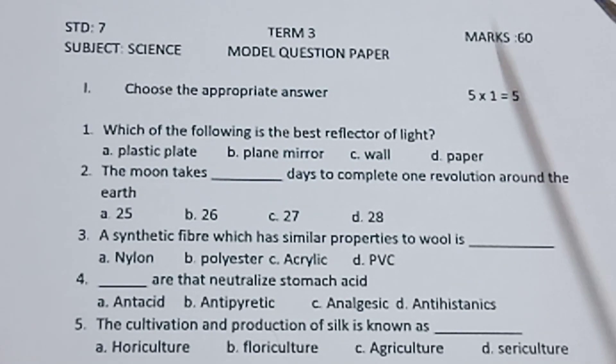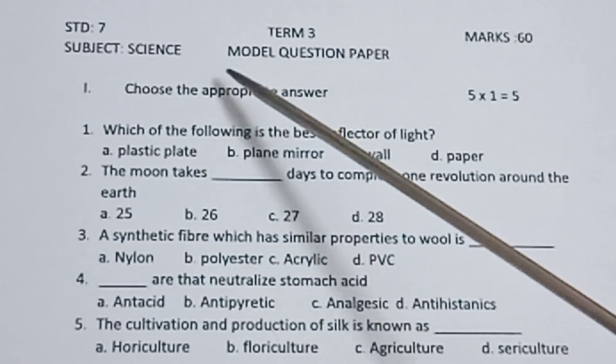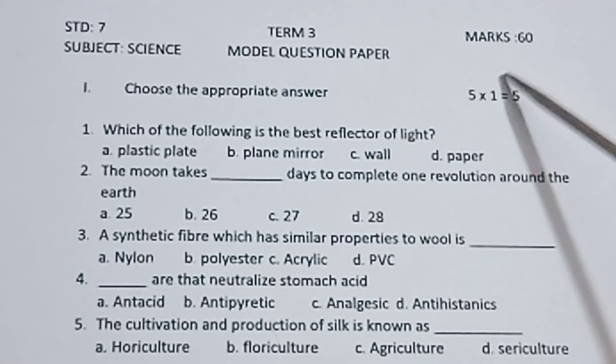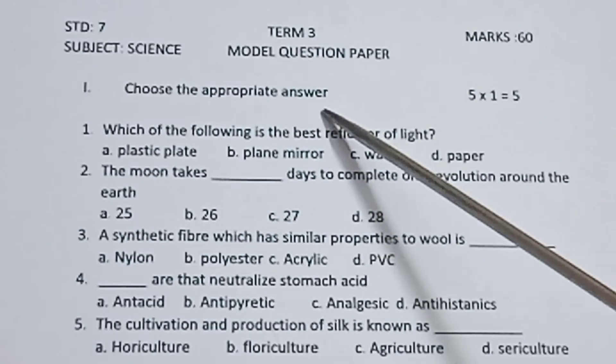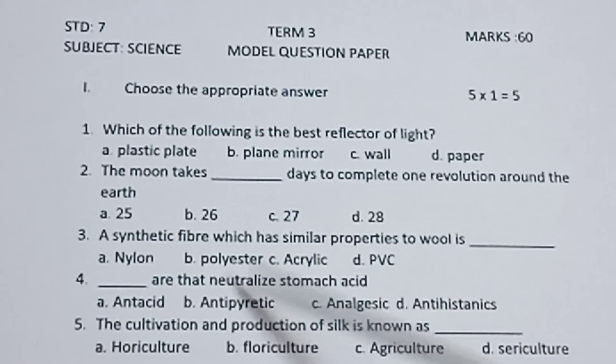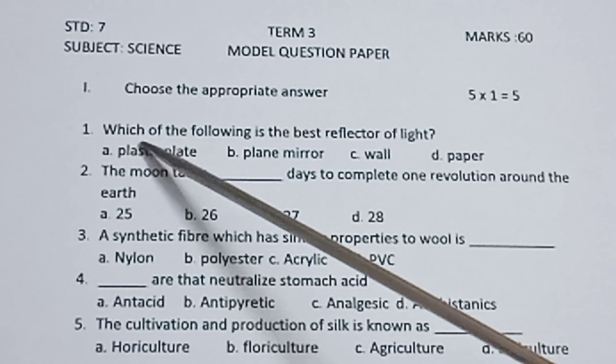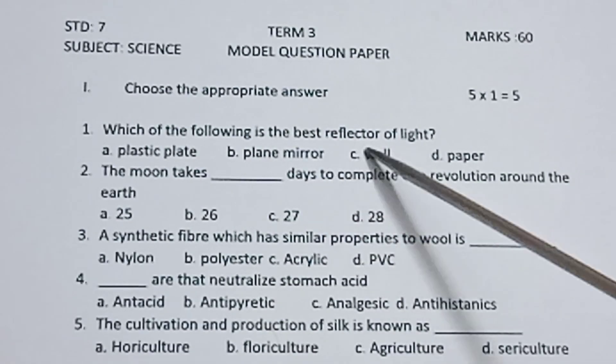This is Standard 7 Science Term 3 model question paper. Maximum marks 60. Roman numeral 1: Choose the appropriate answer. Each one carries one mark.